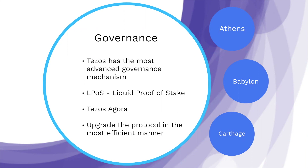Another cool pillar of the governance mechanism is Tezos Agora. You can follow the entire proposal from start to finish on TezosAgora.org — it's a great resource to see information on upcoming proposals. There's also a Discourse forum where you can discuss protocol proposals and learn about new ideas. It's very high quality long-form discussion. The four steps a Tezos proposal goes through are: proposal, exploration, testing, and implementation — with the key goal of upgrading the protocol in the most efficient manner.